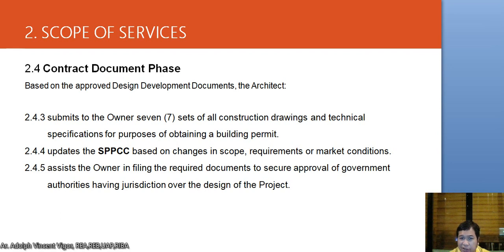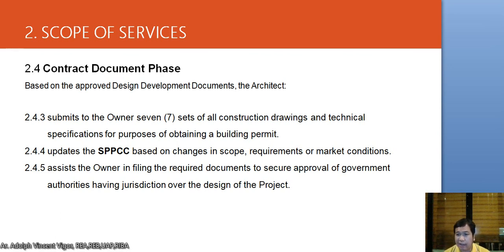The architect submits to the owner seven sets of all construction drawings and specifications for obtaining a building permit, then updates the probable construction cost based on changes in scope, requirements, or market conditions. At this stage, you already have a more detailed idea of the project, so you can provide the owner with a more detailed cost estimate. The architect also assists the owner in filing required documents to secure approval of government authorities having jurisdiction over the project.